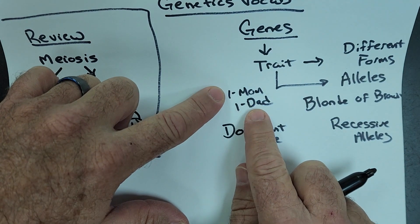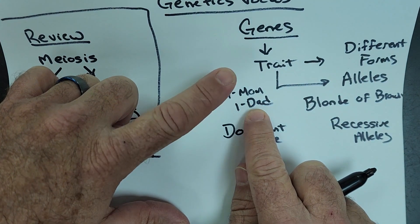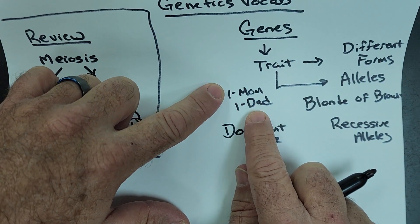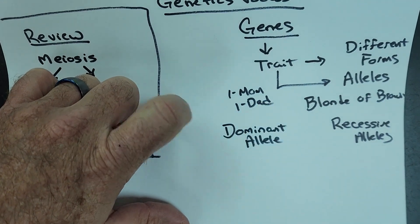Your eye color gene, you got one from mom, one from dad. Your hair color gene, one from mom, one from dad. Your skin color gene, one from mom, one from dad.